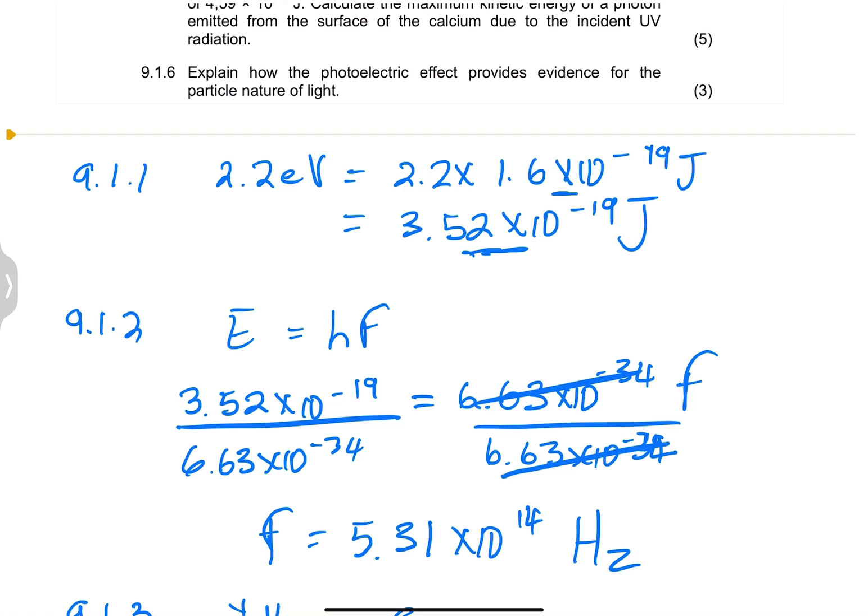But in the particle nature, it doesn't matter what the intensity is, no matter how low the intensity of light is. But once you irradiate the metal, as you increase frequency, then only do you see electrons actually being emitted. I don't know how you're going to phrase that, but just take the explanation that I've just given and put it into words as I move on to the next question.